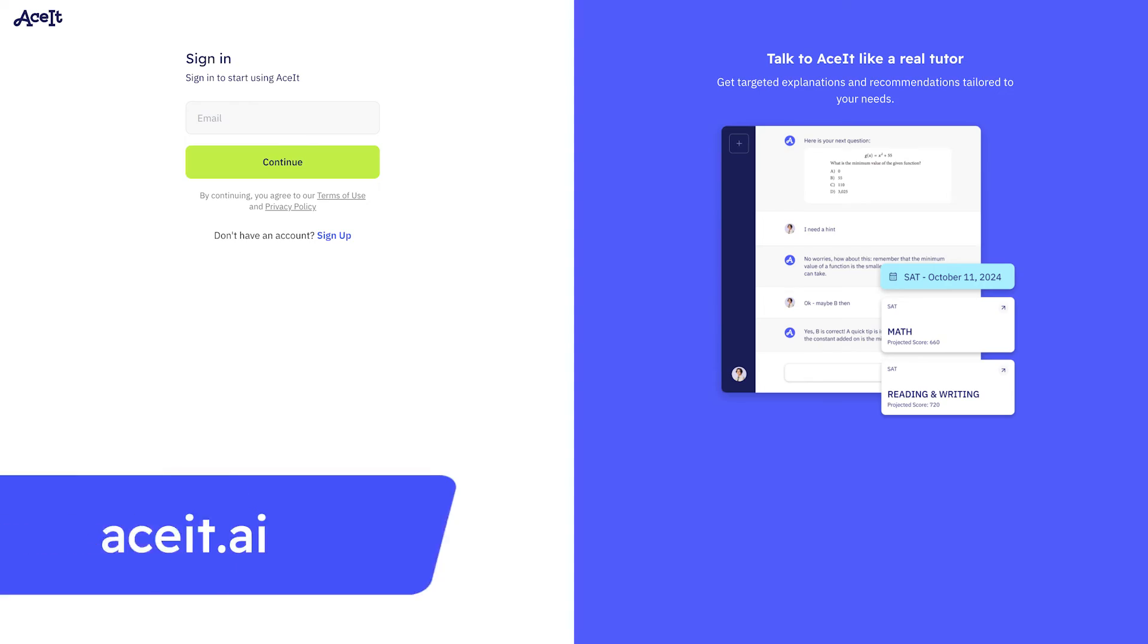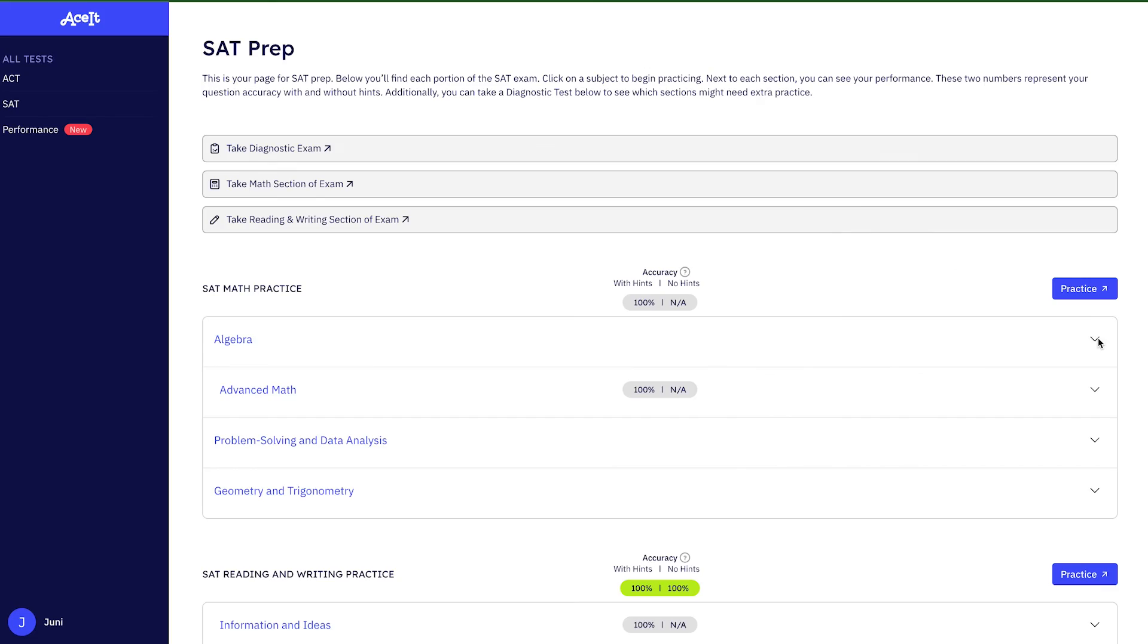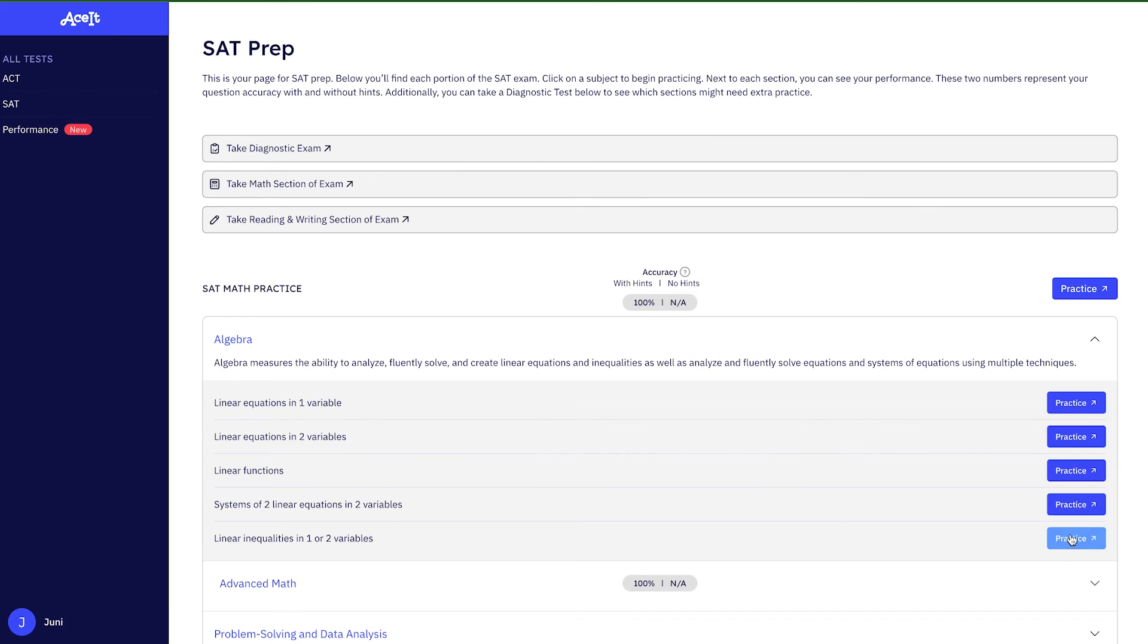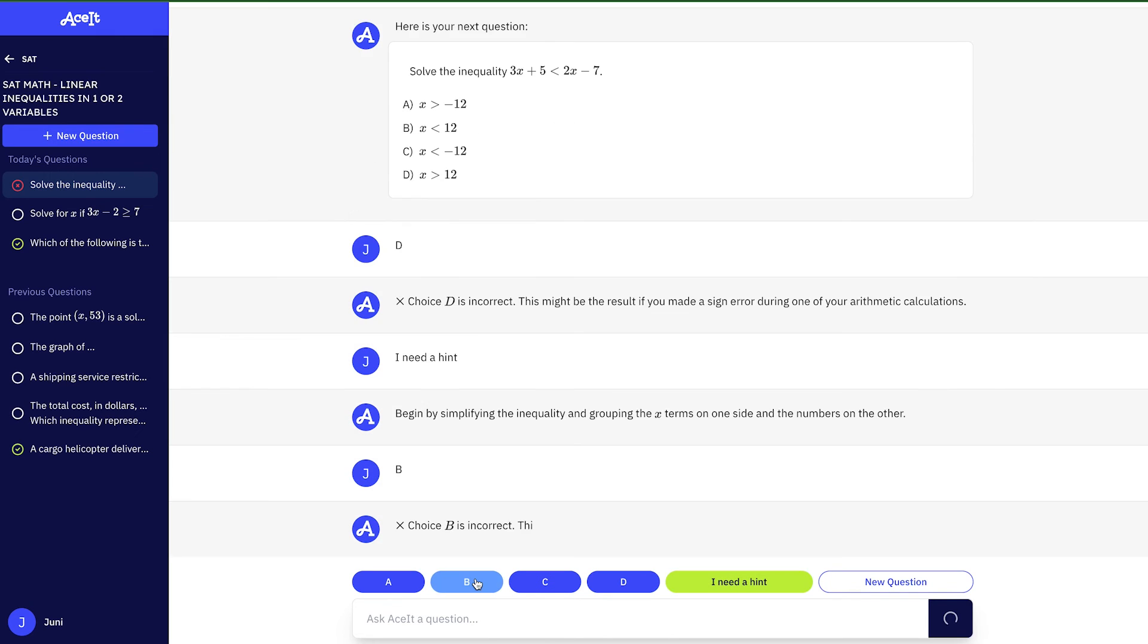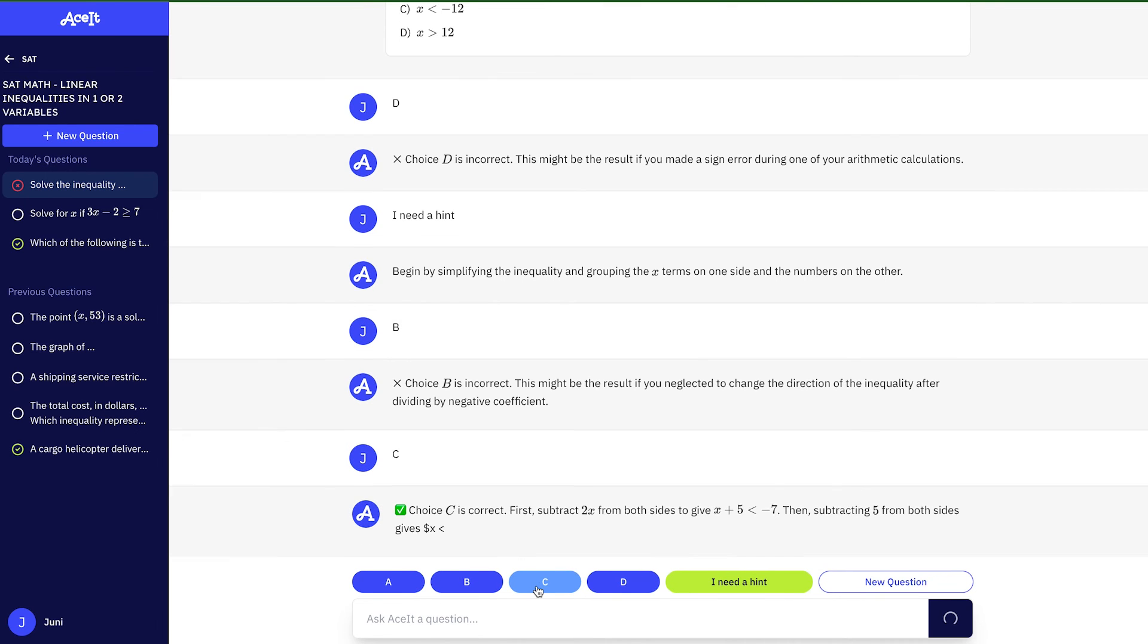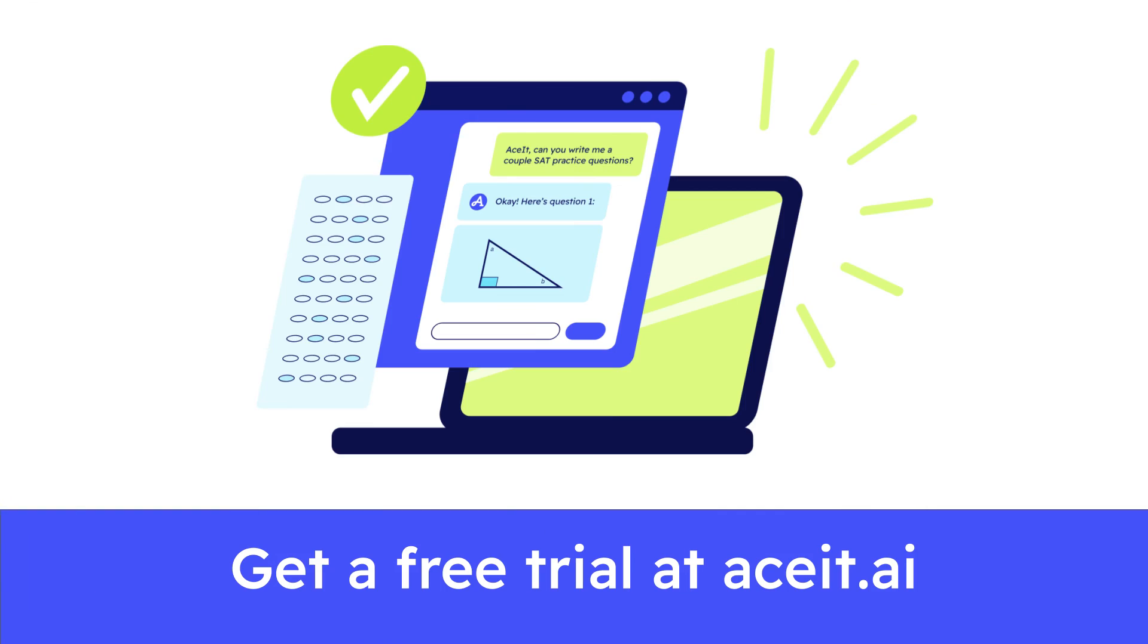For more practice problems and access to a 24-7 online study tool, check out ACET at the link below. ACET is the ultimate study tool for the SATs and the ACTs created by Juni Learning, an award-winning educational tech company that has helped thousands of students take their learning to the next level. Get a free trial when you use the link in the description. Until next time, and good luck studying!